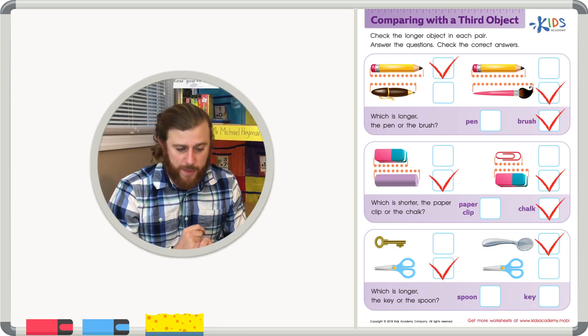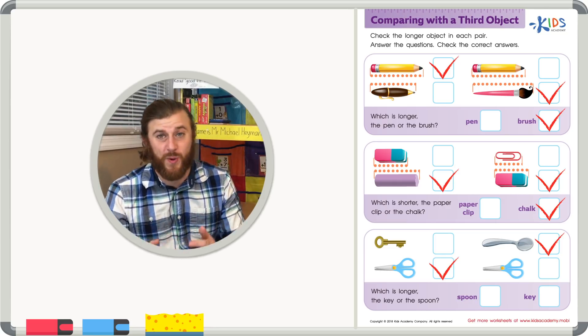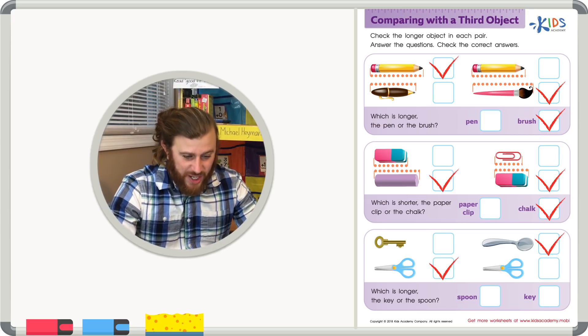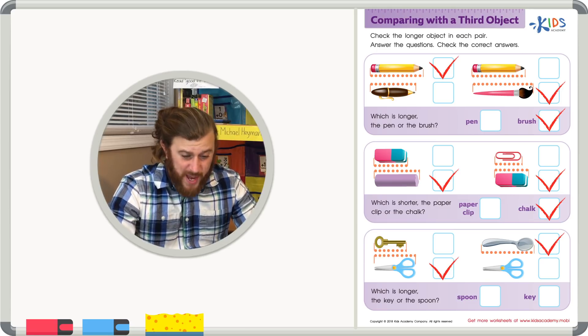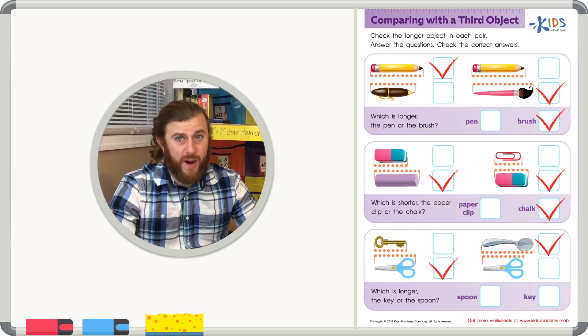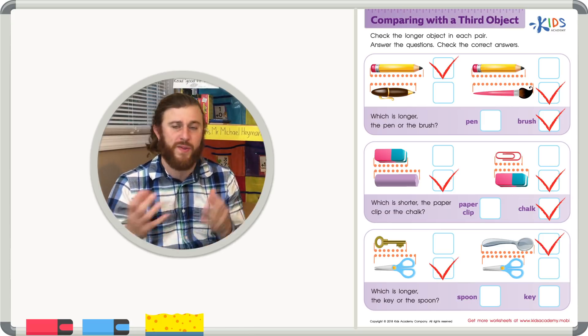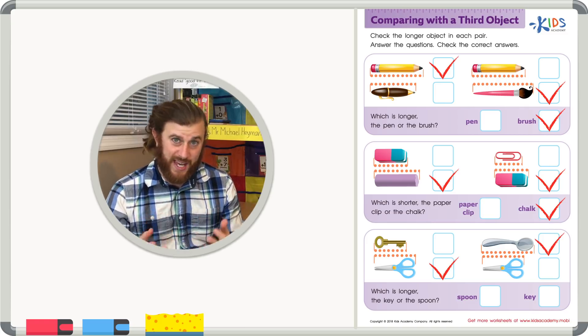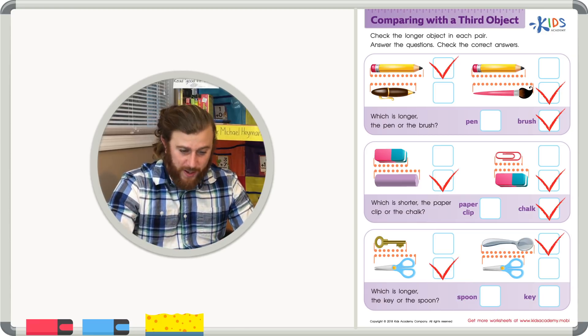Now time for that tricky question. Which is longer? The key or the spoon? Well, we know the key is shorter than the scissors. We also know the spoon is bigger than the scissors. Therefore, the spoon is the biggest object we have, because it's bigger than the scissors, and we know the key is smaller than the scissors. And the key is the smallest object we have. So we know the spoon is bigger than the key.